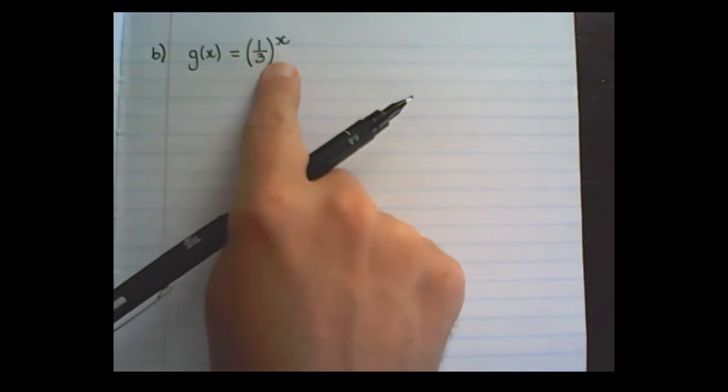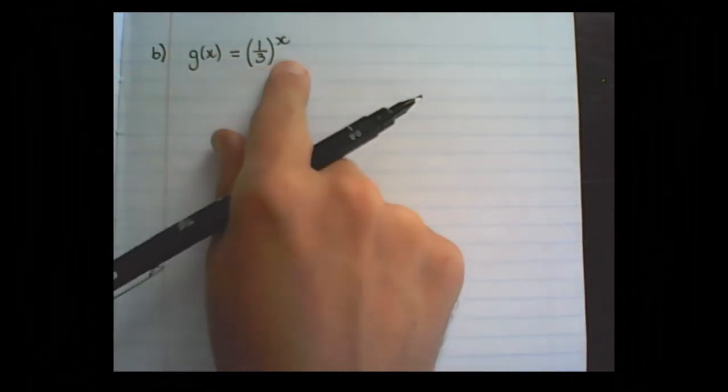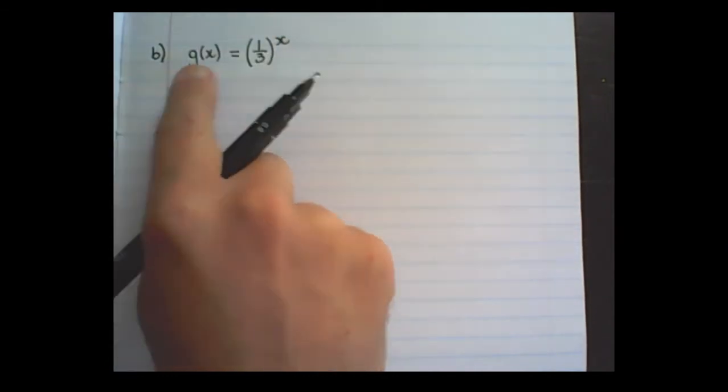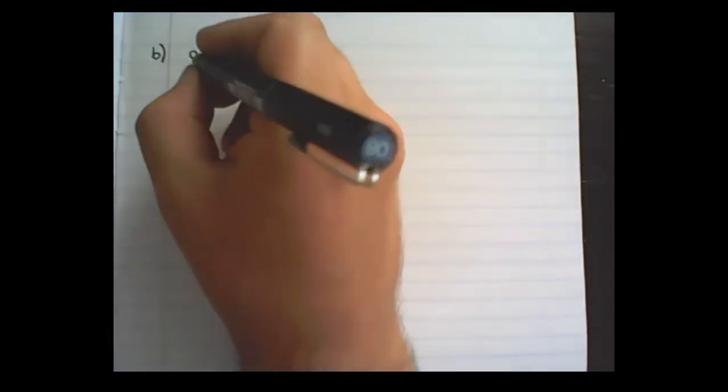Our second function that we will plot is g(x) equals one-third to the power of x. Before we plot it, let's find its inverse. So I replace g(x) with y, step one.